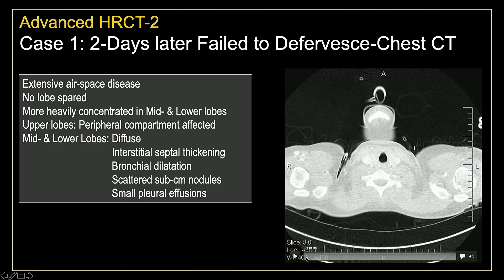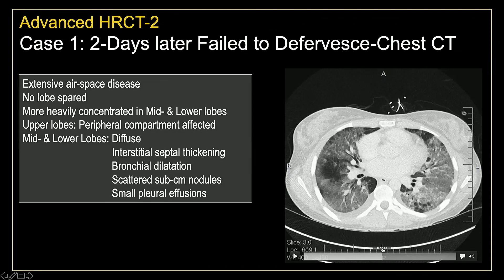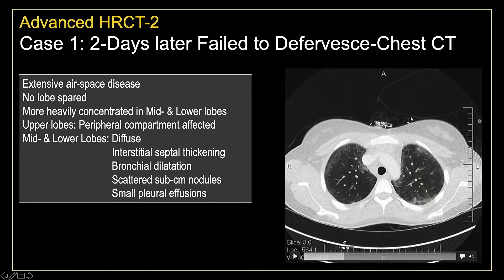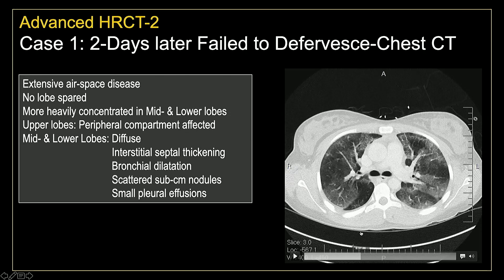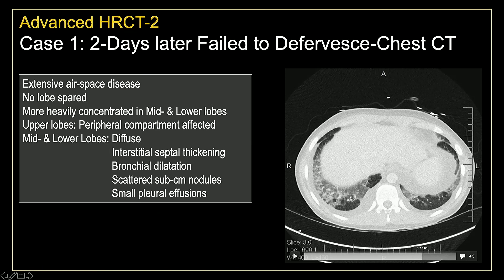What do we see? We see extensive airspace disease — there's really no lobe spared. It's more heavily concentrated within the mid and lower lung zones. In the upper lobes, it's predominantly involved in the peripheral compartment. In the lower compartment, it's more diffuse, peribronchial, with associated bronchial dilatation. We do have some scattered subcentimeter nodules here and there, and we do have small bilateral pleural effusions.